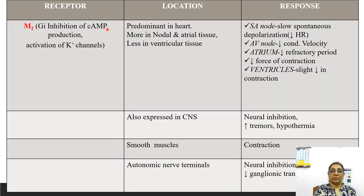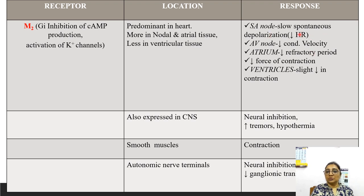M2 receptors are inhibitory, acting through inhibition of cyclic AMP production and activation of potassium channels causing hyperpolarization. They are predominantly located in the heart, more in nodal and atrial tissue and less in ventricular tissue. At the SA node, the response is slowed spontaneous depolarization; at the AV node, decreased conduction velocity; at the atrium, decreased refractory period and decreased force of contraction. Also expressed in CNS causing neural inhibition, increased tremor, and hypothermia, and smooth muscle contraction. At autonomic nerve terminals, neuronal inhibition decreases ganglionic transmission.